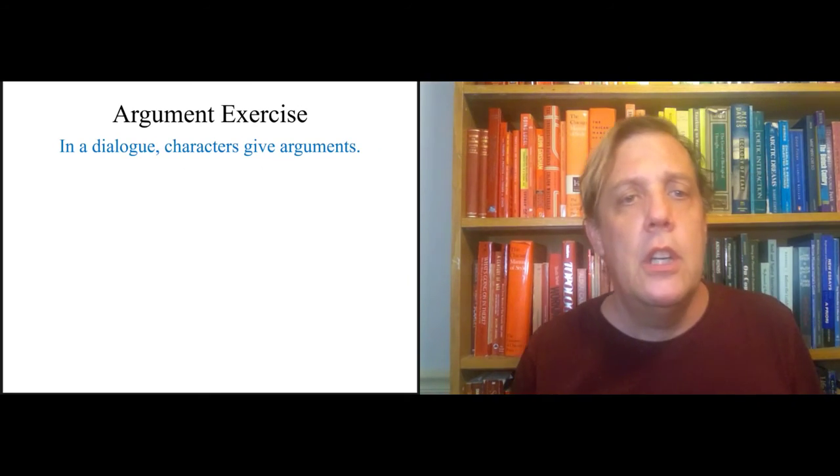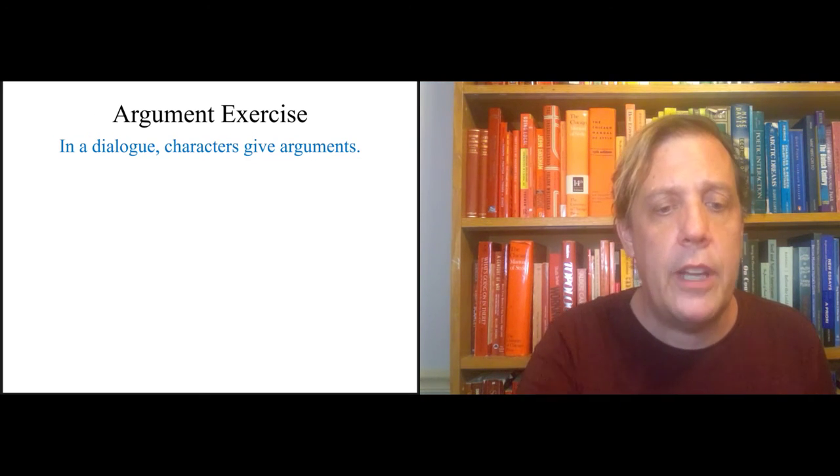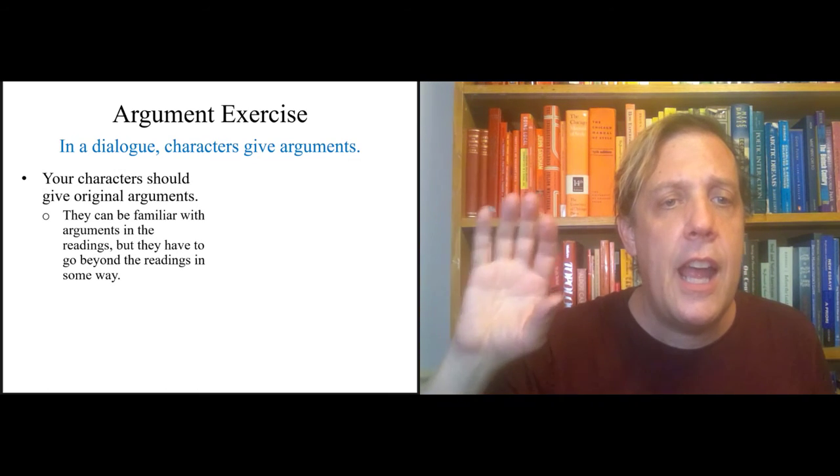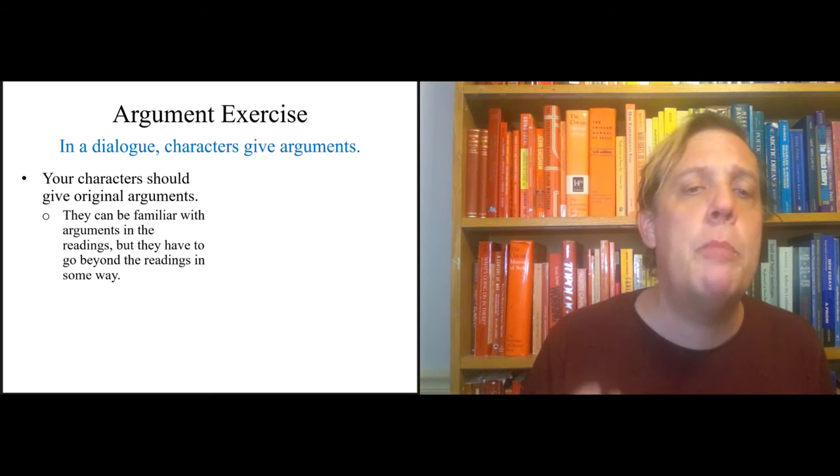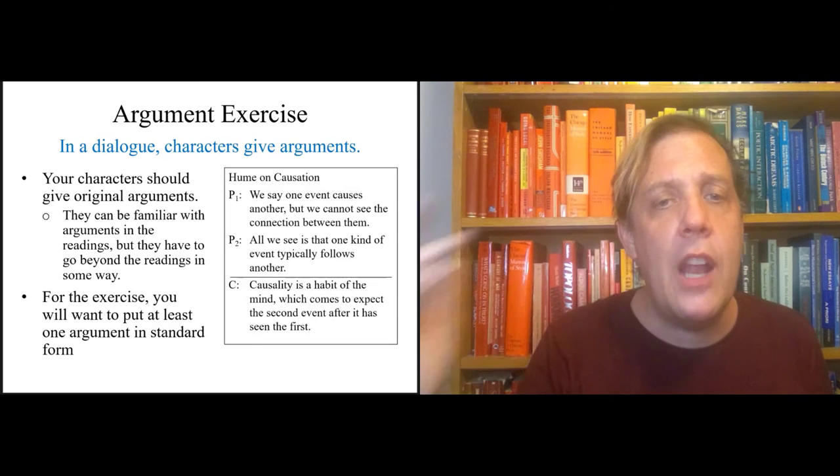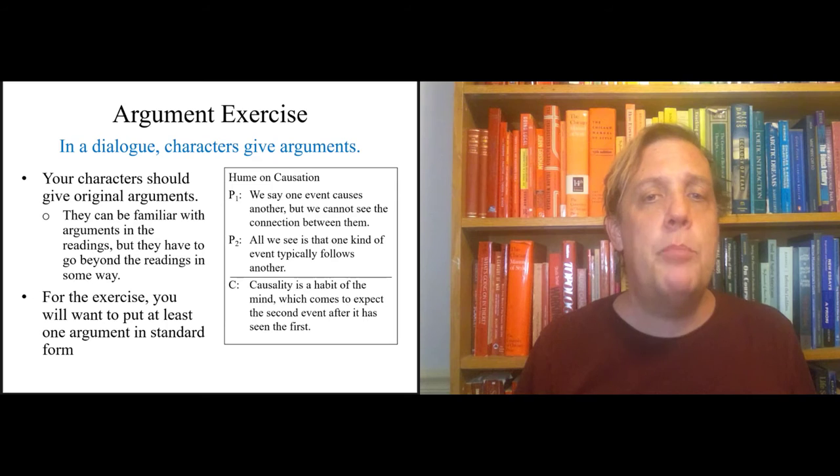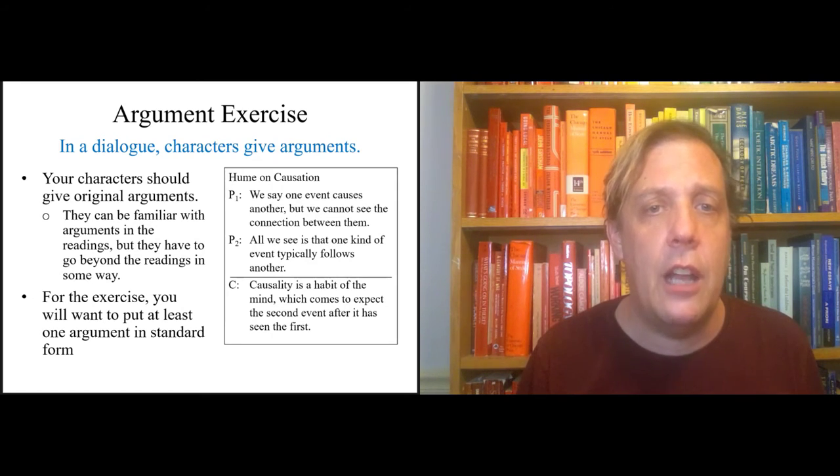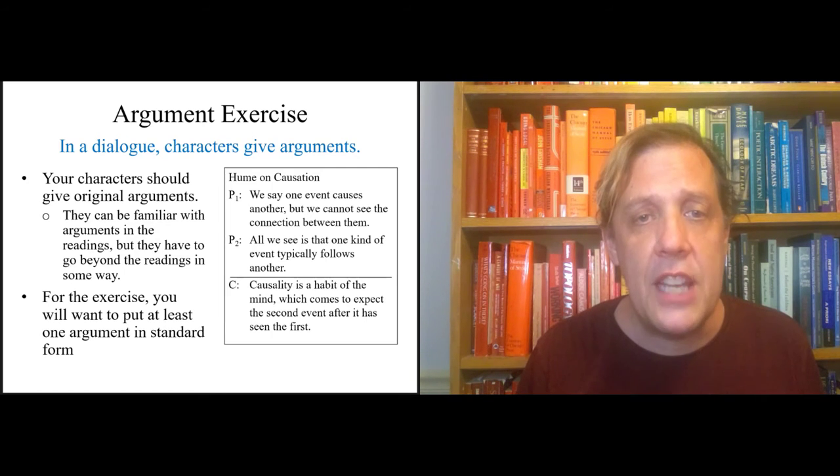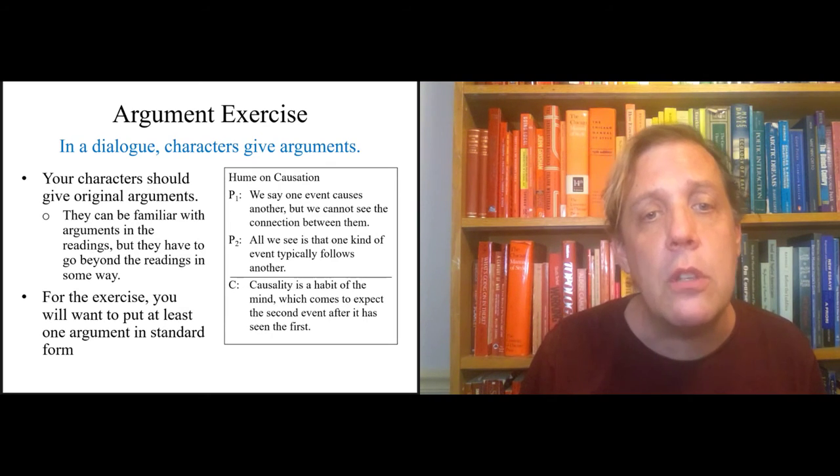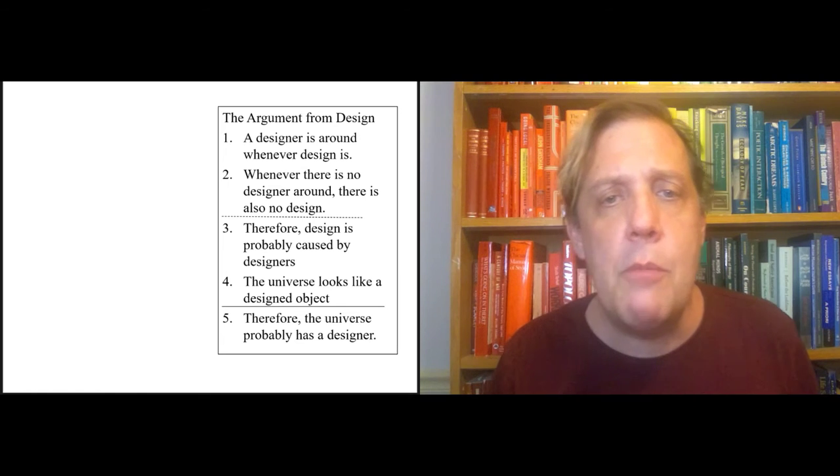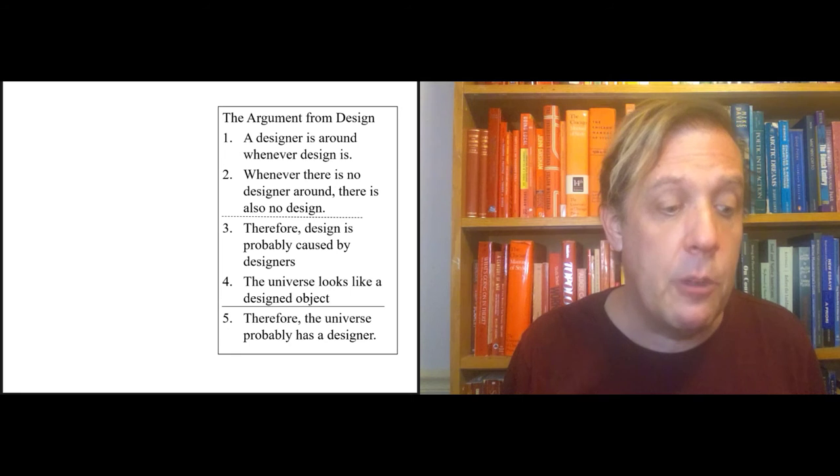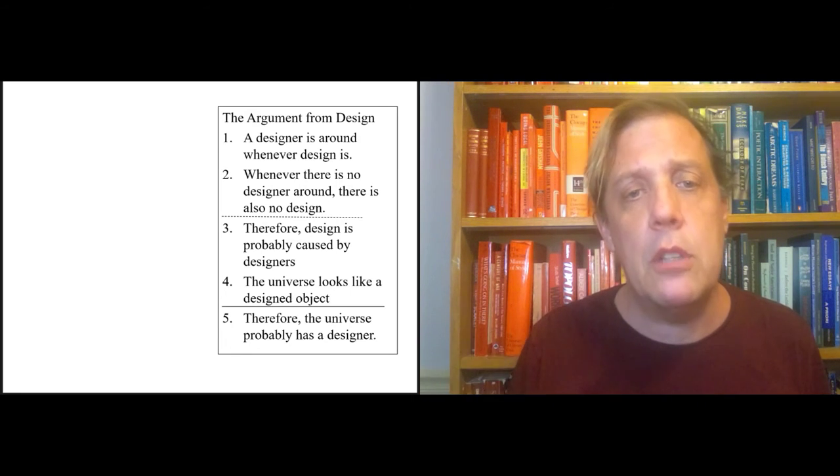Finally, it needs to have an argument in a dialogue. The dialogue characters give arguments. Your characters should have original philosophical arguments. They might be familiar with the arguments in the reading, but they have to go beyond them in some way. So for this exercise, you want to take at least one argument that one of your characters is going to give and put it in standard form. And to illustrate this again, I've got an argument over here from Hume on causation presented in standard form. You've got two premises and a conclusion. The conclusion being that causation is just a kind of habit of the mind, it's not a real feature of the world. Your argument might be more elaborate. So this is over here, this is Hume's argument from design or the argument from design presented in Hume, and it's got a sub conclusion and an intermediate conclusion.